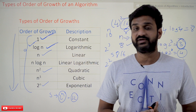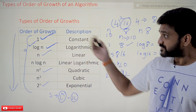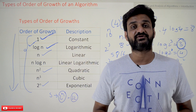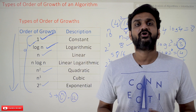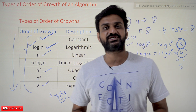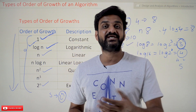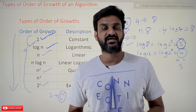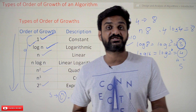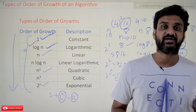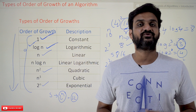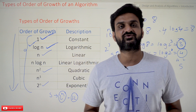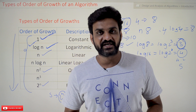These are the order of growth types considered when finding the efficiency of an algorithm. Hope you got clarity on this concept. Thanks for watching. If you haven't subscribed to our channel, please subscribe and press the bell icon for the latest updates. If you have any doubts, post in the comment section below. If this video was helpful, please give a like and share it with your friends.